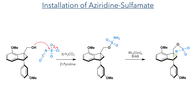With the alcohol installed, the authors turned their attention towards the installation of an aziridine sulfamate. Chlorosulfonyl isocyanate was reacted with the alcohol, which installed a sulfanamide group upon workup with pyridine. Reaction of this sulfanamide with a rhodium catalyst and oxidising reagent promoted the insertion of the amine into the double bond to form the target aziridine sulfamate.